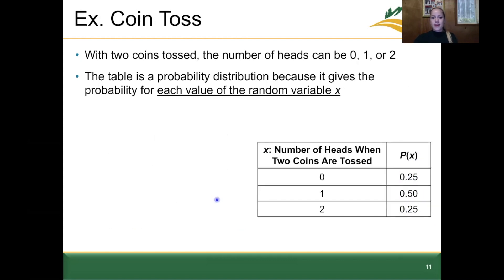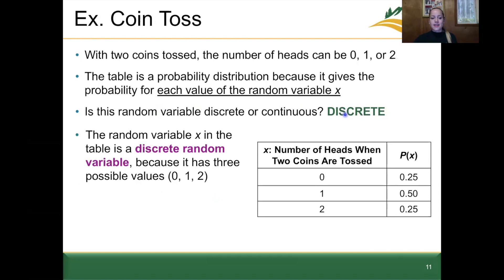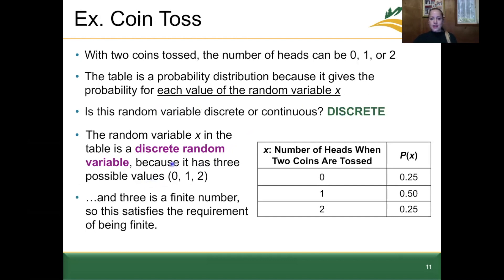This variable is discrete because it has three different possible values — zero, one, or two — and we can definitely count those. Three is a finite number, satisfying the requirement of being finite and countable, which is what we look for when deciding between a discrete and a continuous random variable. Discrete random variables are finite and countable.